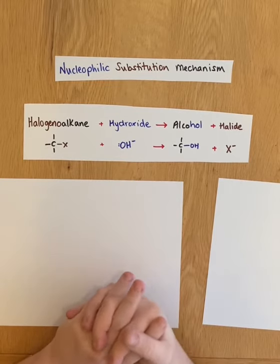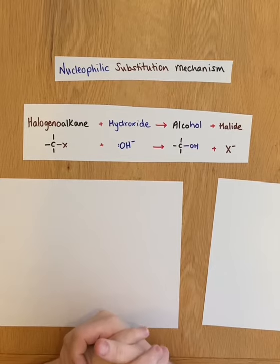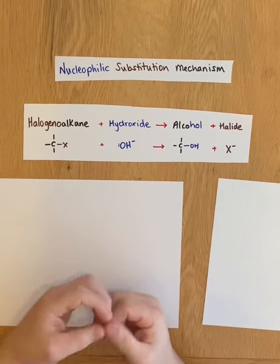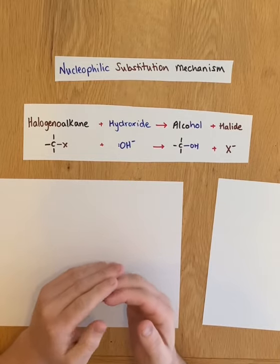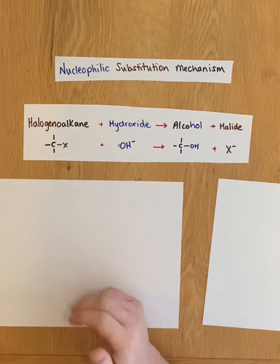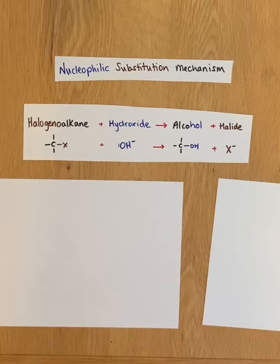Hydroxide ions need to be aqueous, in aqueous solution, for nucleophilic substitution reaction. Don't forget that hydroxide ions that are ethanolic, in other words dissolved in ethanol, will not react via a nucleophilic substitution mechanism. Instead the hydroxide ion will react as a base and you'll get an elimination reaction.